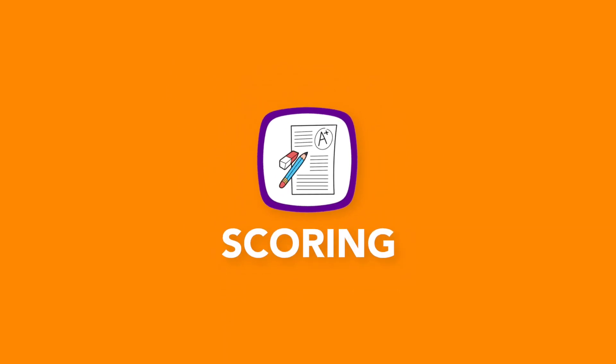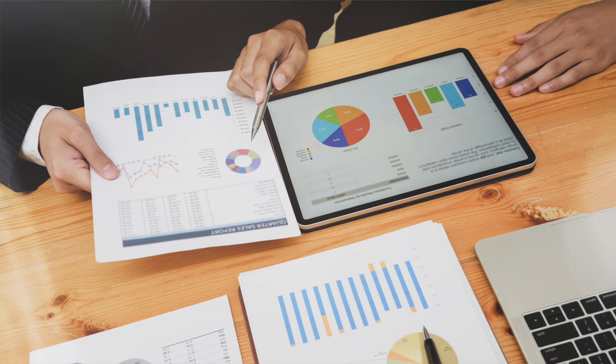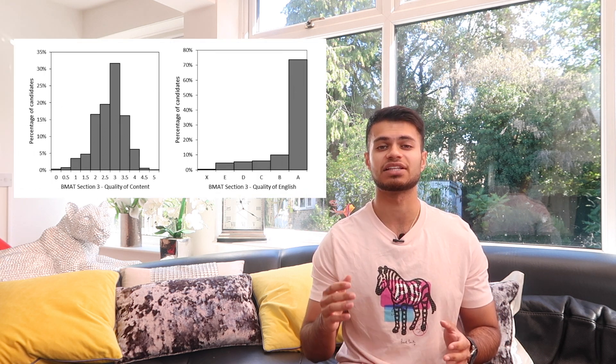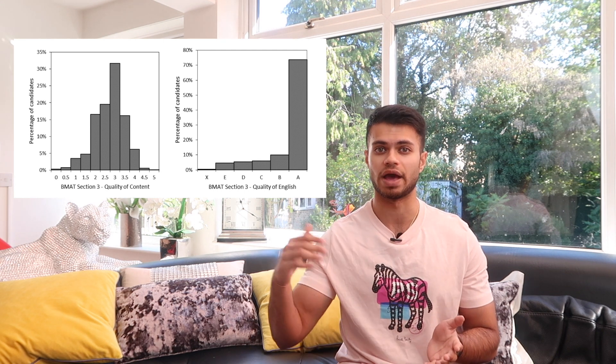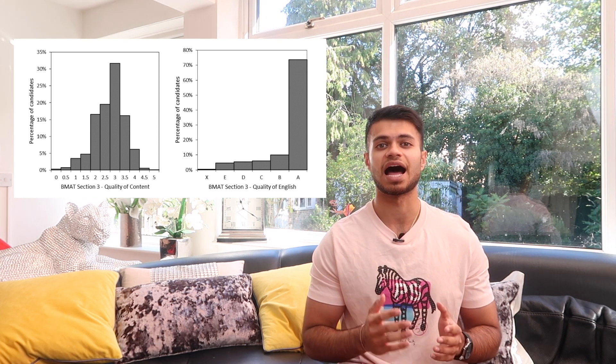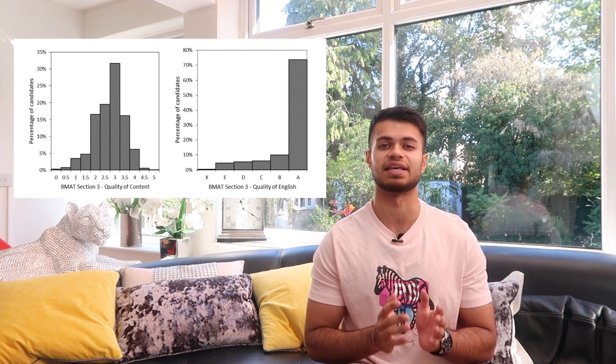In terms of scoring, your essay will be marked by two examiners and the score you take home is the average between what both examiners have given you, to combat subjectivity and give some element of fairness. In last year's cycle, combining both the August and October BMATs, less than 5% of candidates got more than a 4A. The majority of candidates get a 3 for content, and over 70% get an A for spelling, punctuation, and grammar.